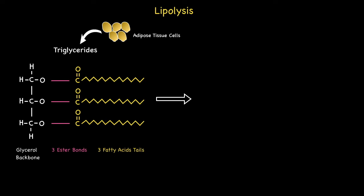Let's begin with the first step. This involves the hydrolysis of the first ester bond. During each ester bond cleavage, the blue hydrogen atom on the far left bonds to the oxygen on the glycerol backbone, while the remaining blue HO attaches to the carbon on the fatty acid residue on the right. Here is an illustration of the products of the first step.